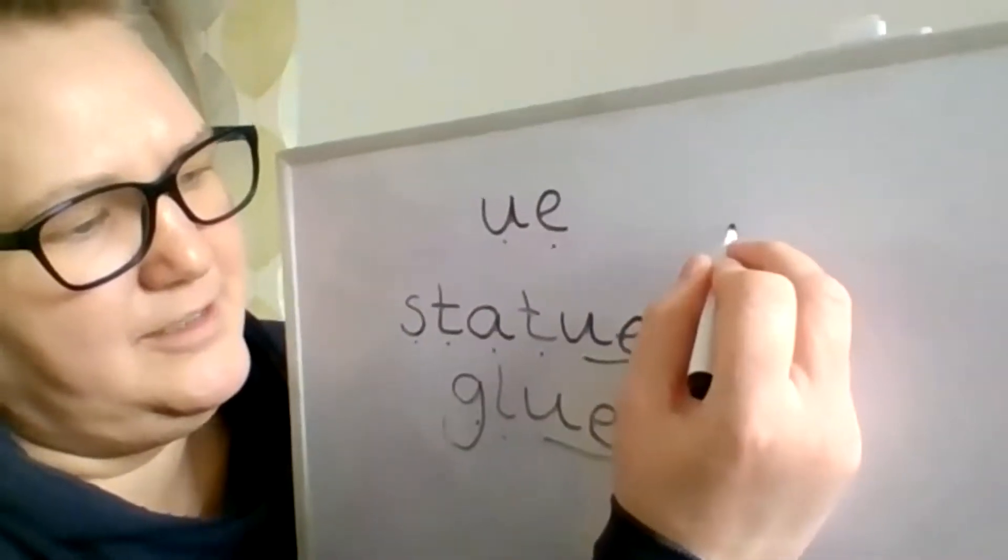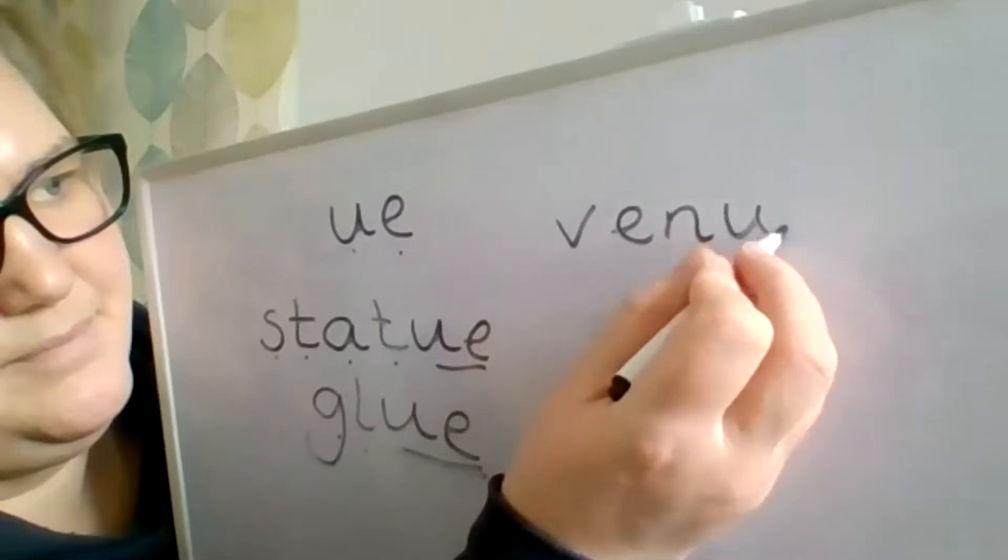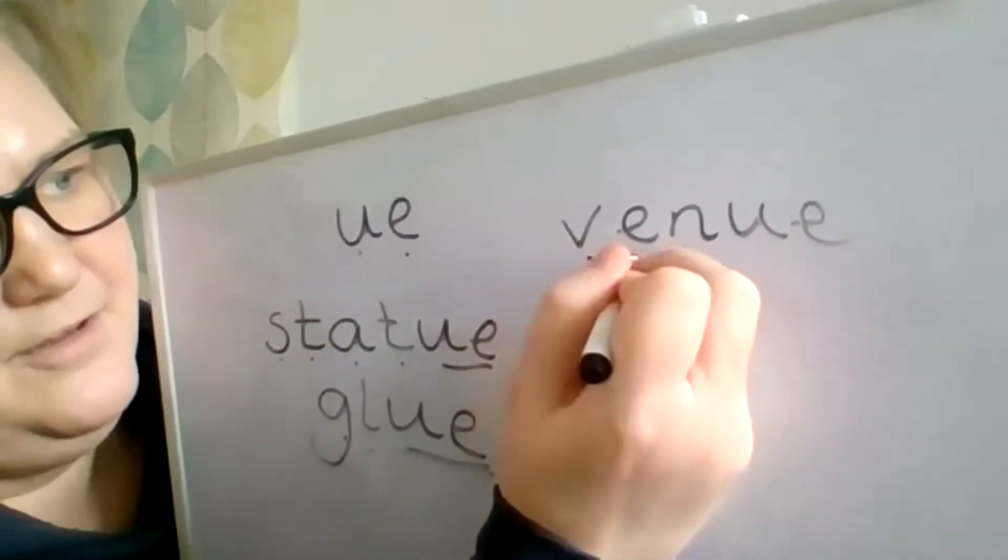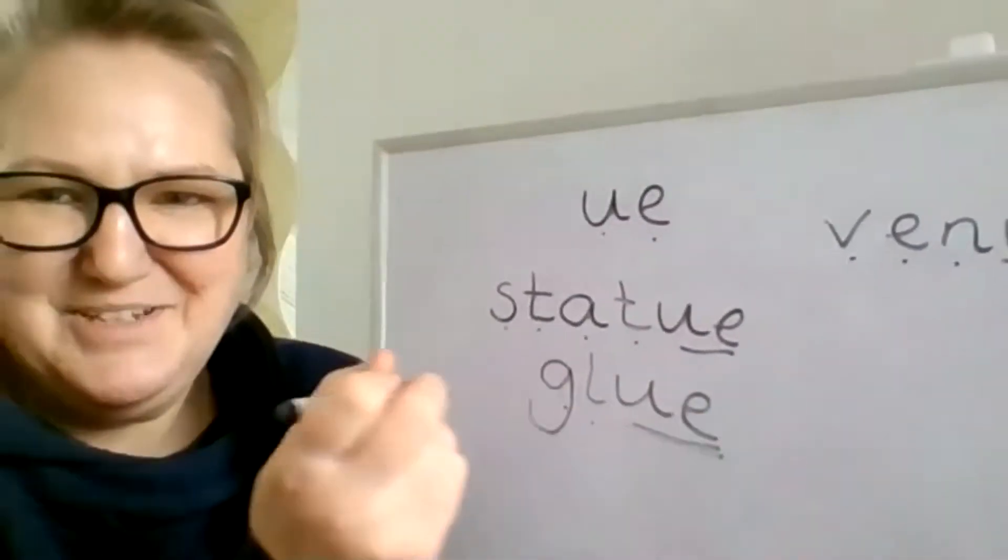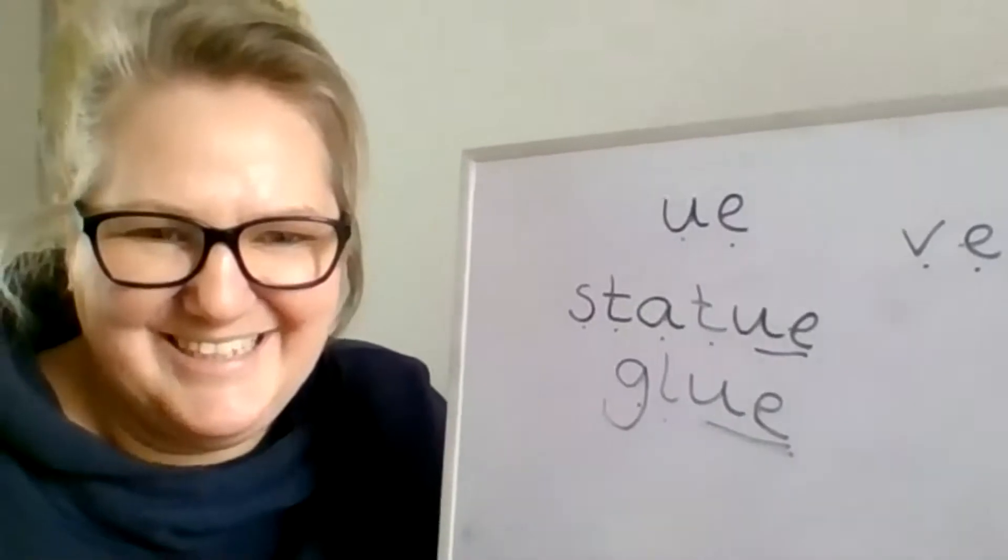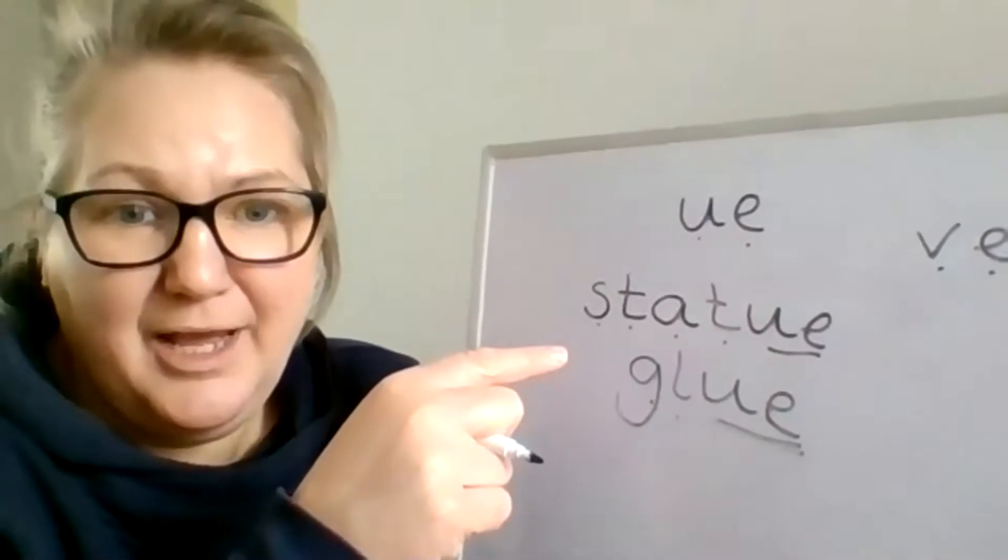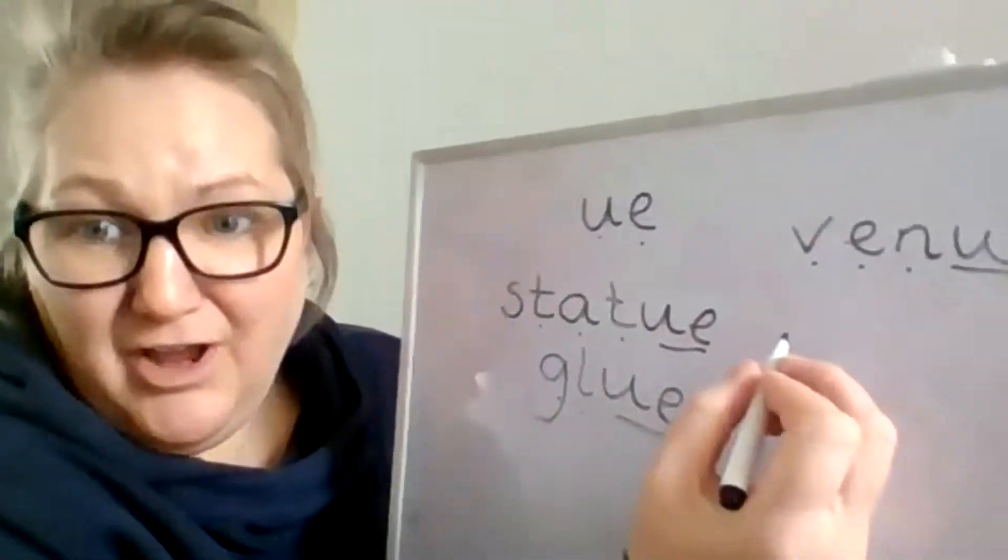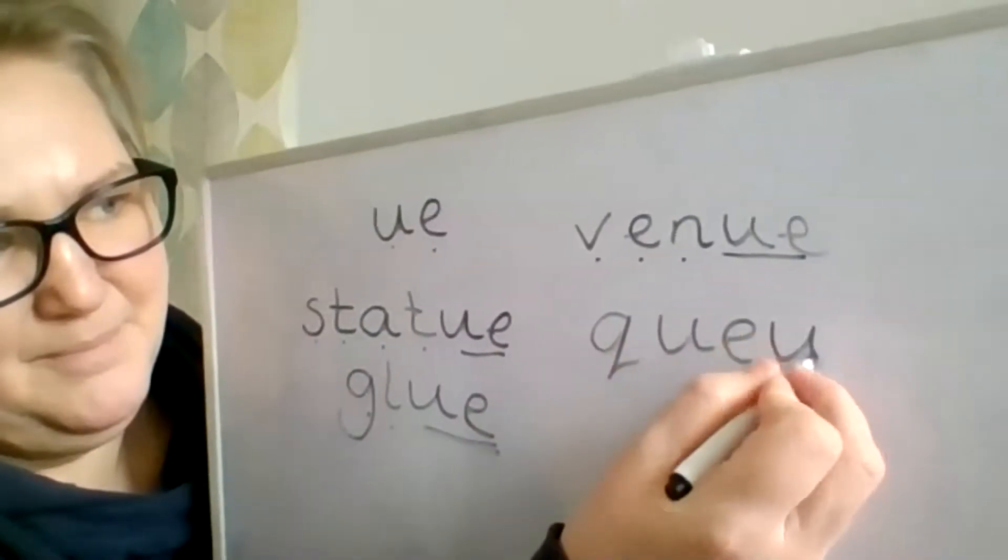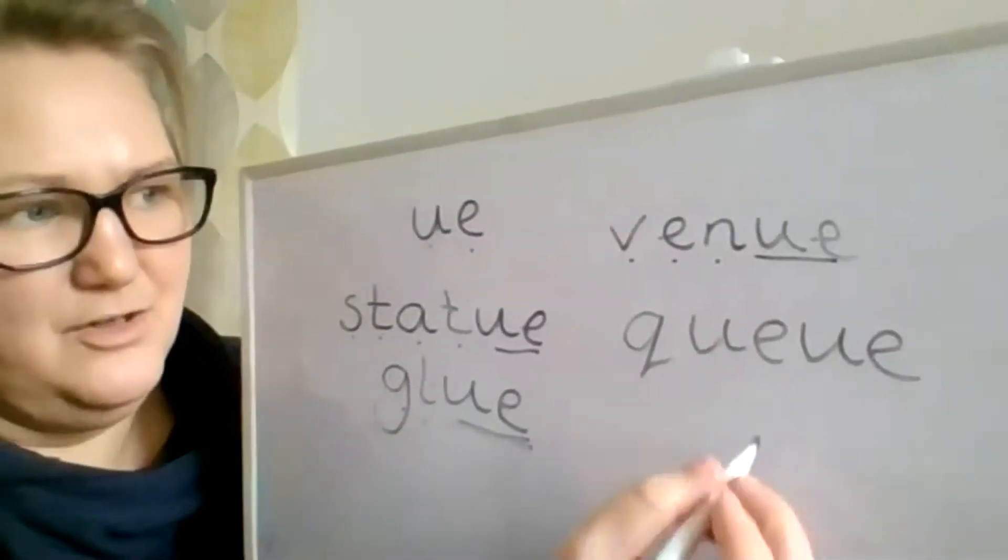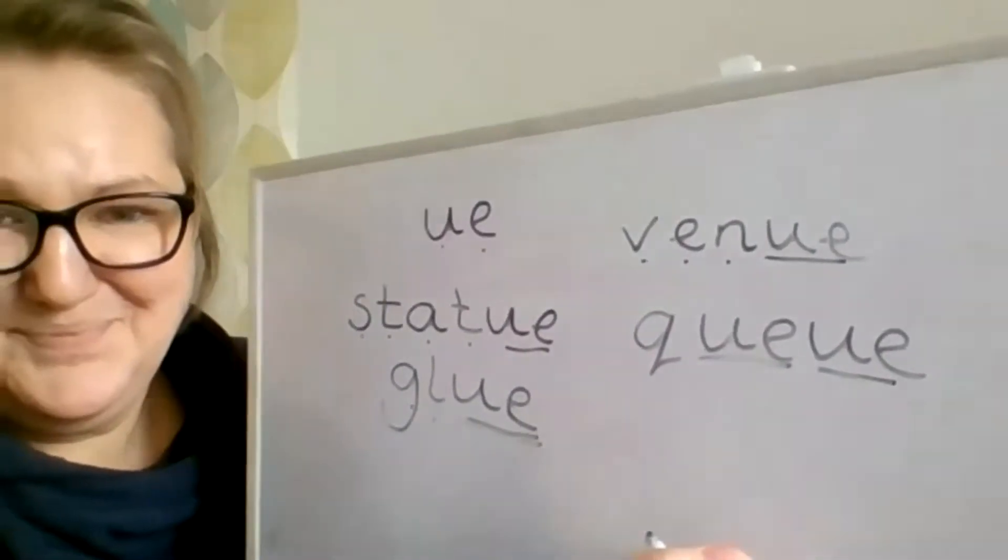We could have the word venue. Hopefully you told your family a lot more words than that. You could have blue glue or barbecue or a queue, when we line up in a queue. It's a funny one. It's got lots of them in. It's got two ue's.